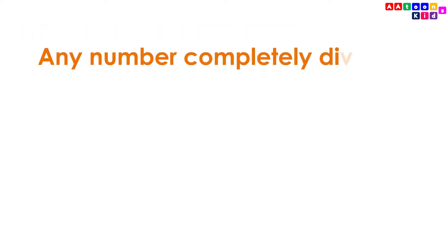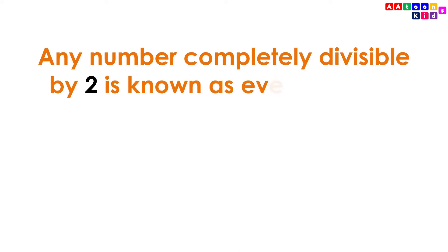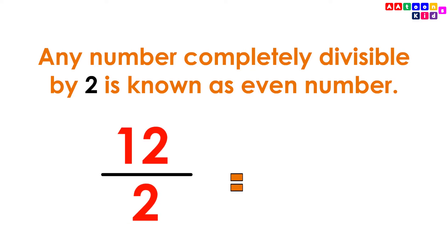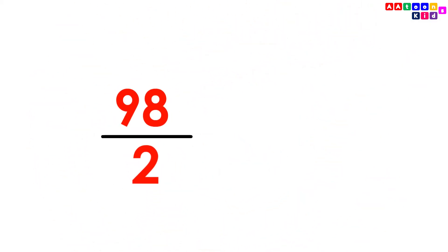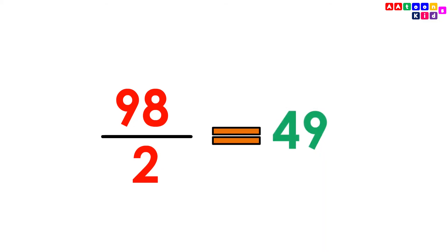One more way to identify even numbers: any number completely divisible by 2 is known as an even number. For example, 12 is completely divisible by 2, giving 6, so 12 is an even number. 98 is completely divisible by 2, giving 49, so 98 is an even number.